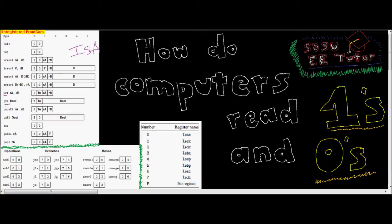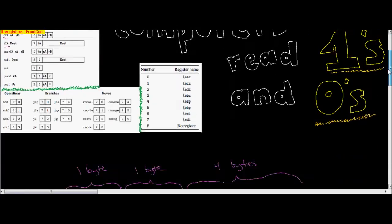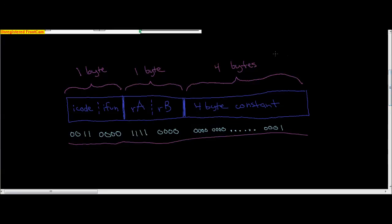This is your jump — there are multiple jump functions: there's regular plain old jump, jump greater than, jump less than, jump equal to. So we have to decide which one of those we want, and that's decided in iFun. And then if we need registers, we have to specify which registers we're talking about, so that's RA and RB, and they both get four bits each.